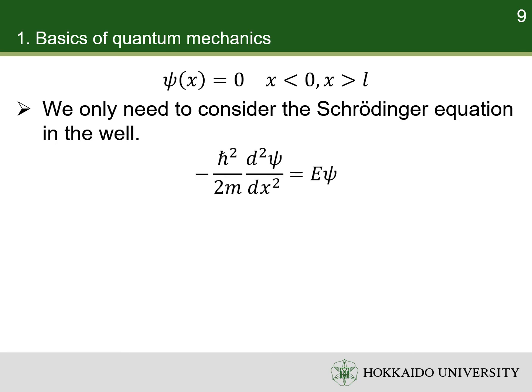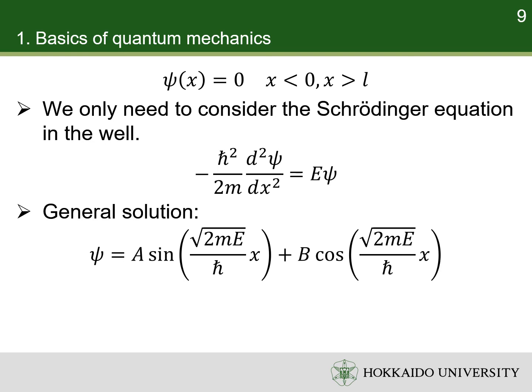The wave function outside the well is zero, so we only need to consider the Schrödinger equation inside the well. The Schrödinger equation inside the well reads as shown. The general solution is the sum of a sine function and a cosine function, where a and b are arbitrary constants. You may not know how to solve the differential equation, but it is very easy to check the solution.